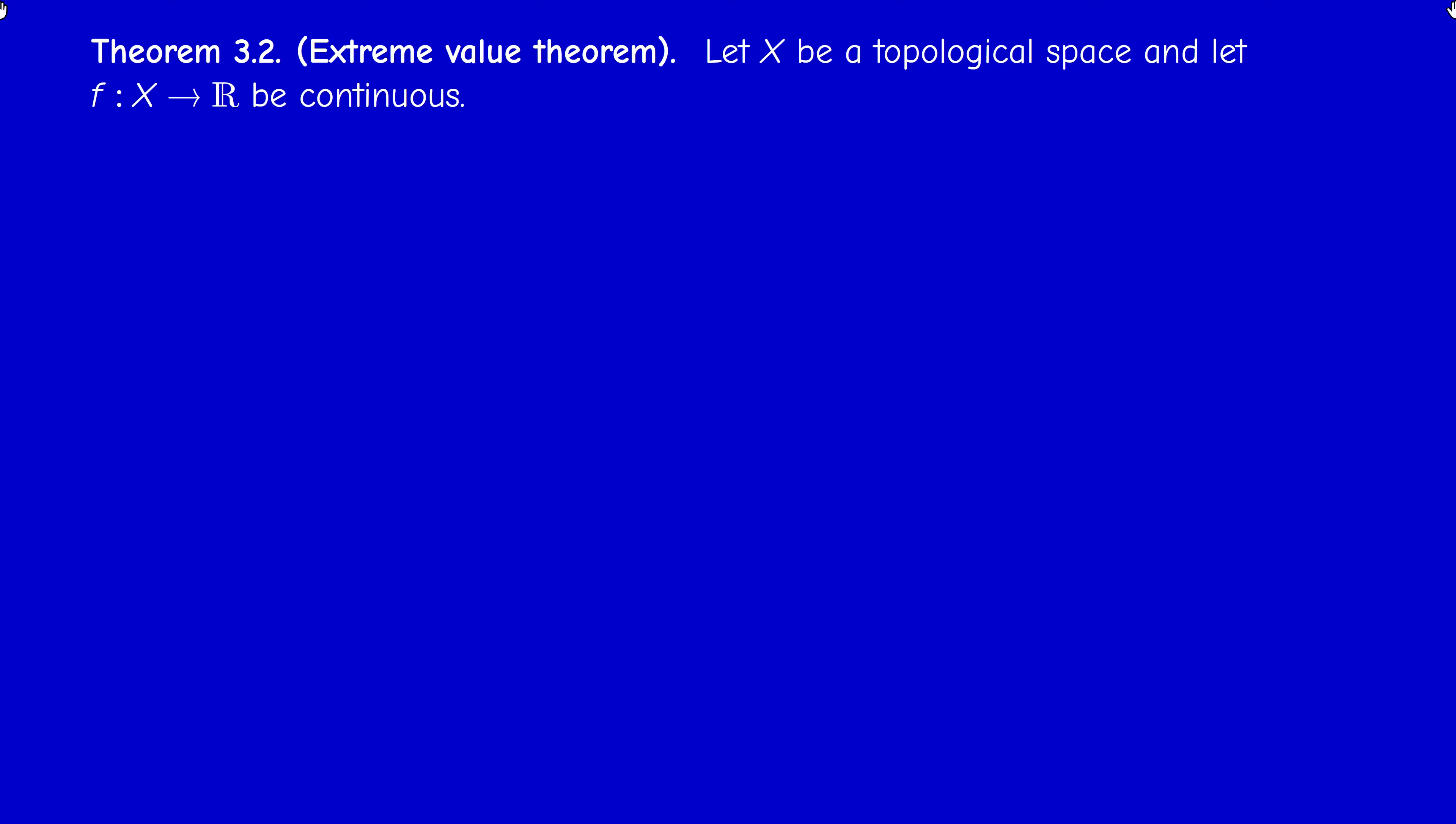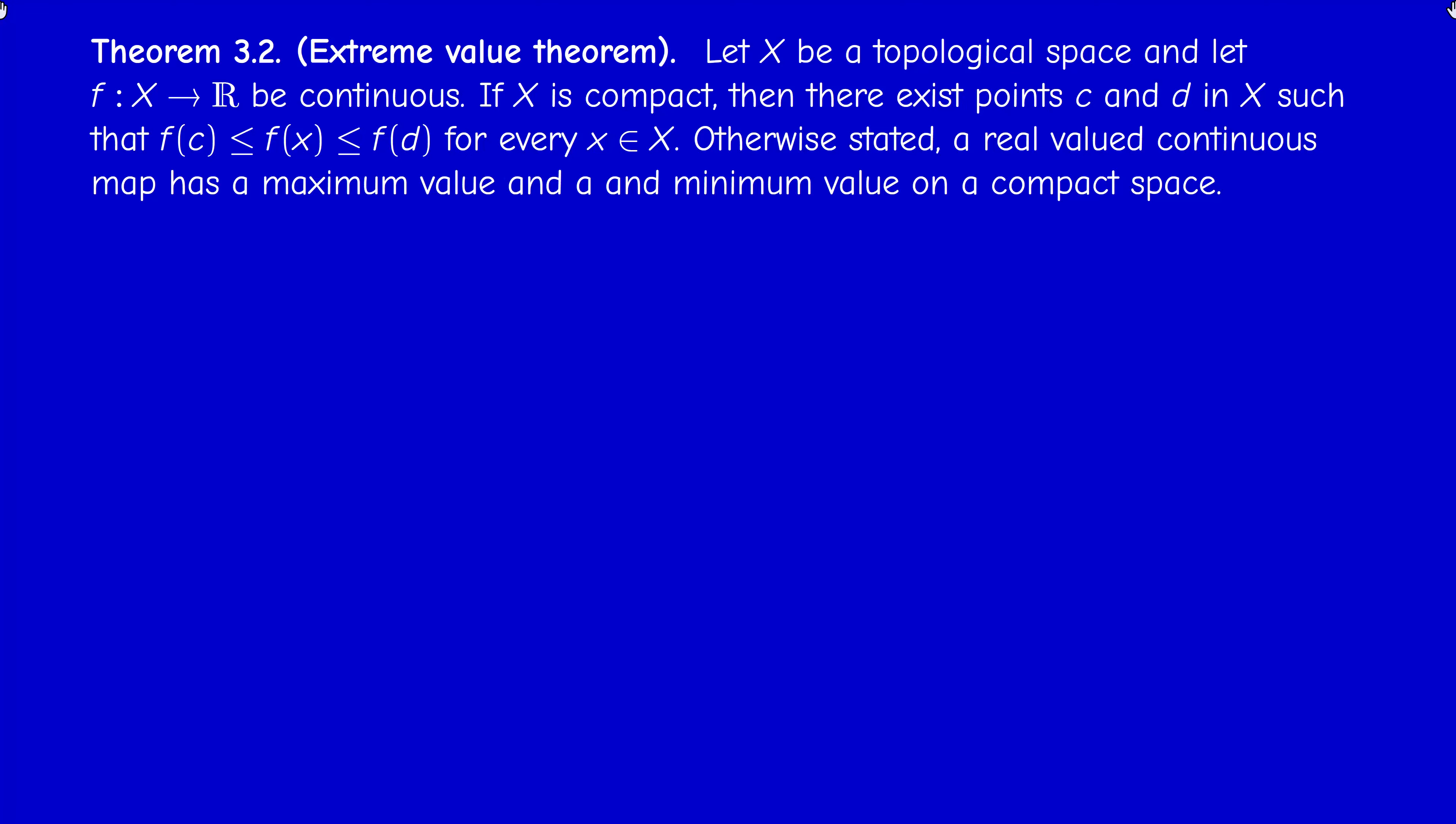As a corollary, we have the fundamental extreme value theorem that you probably know from first year. But you know it for a map from a closed interval [a,b] into R. But here we can work in an arbitrary topological space. So if X is compact and f is continuous from X to R, then f is bounded and achieves its bounds. Or if you like, a real valued continuous map has a maximum value and a minimum value on a compact space. This is so important.